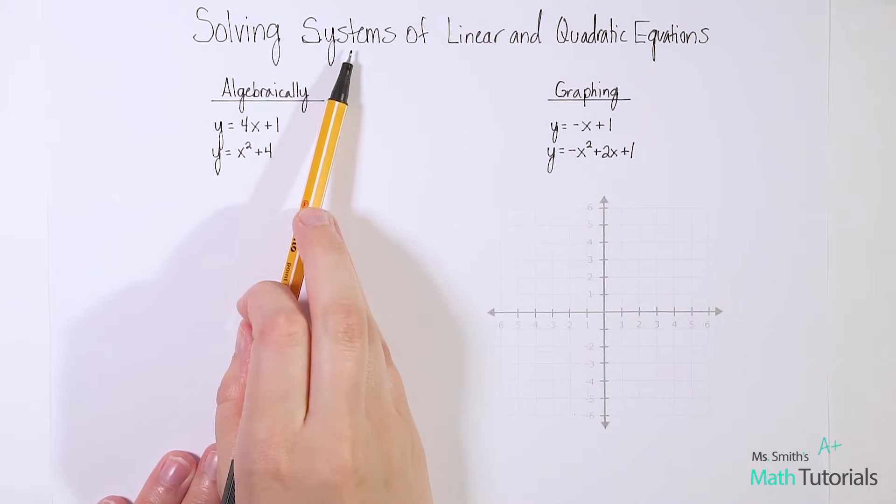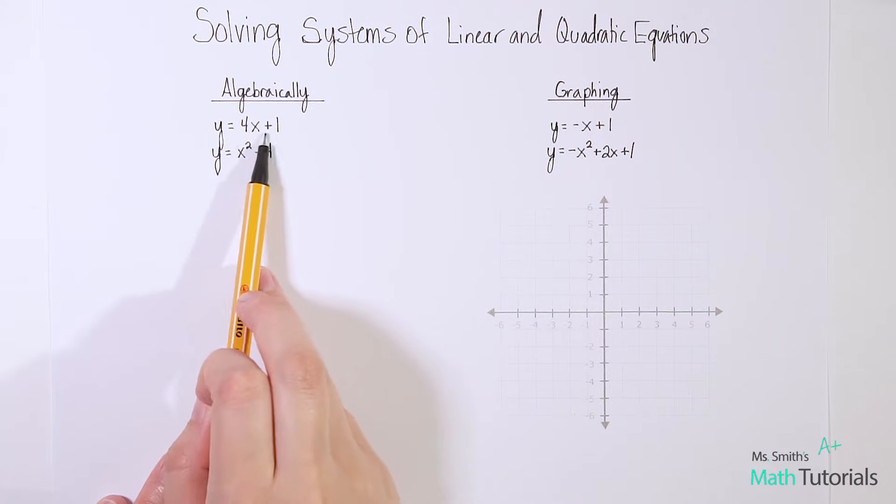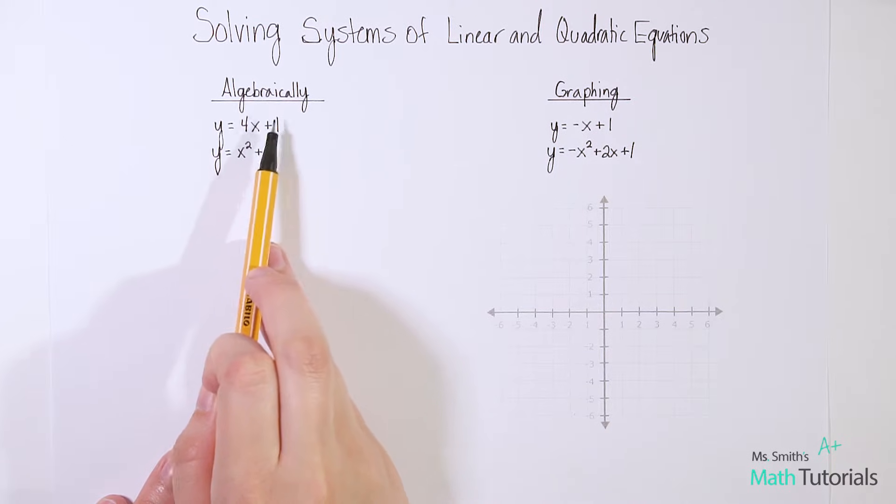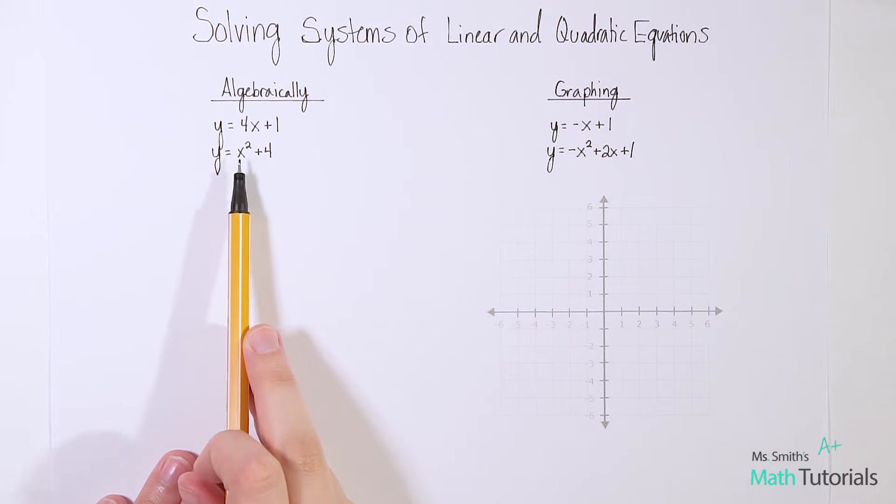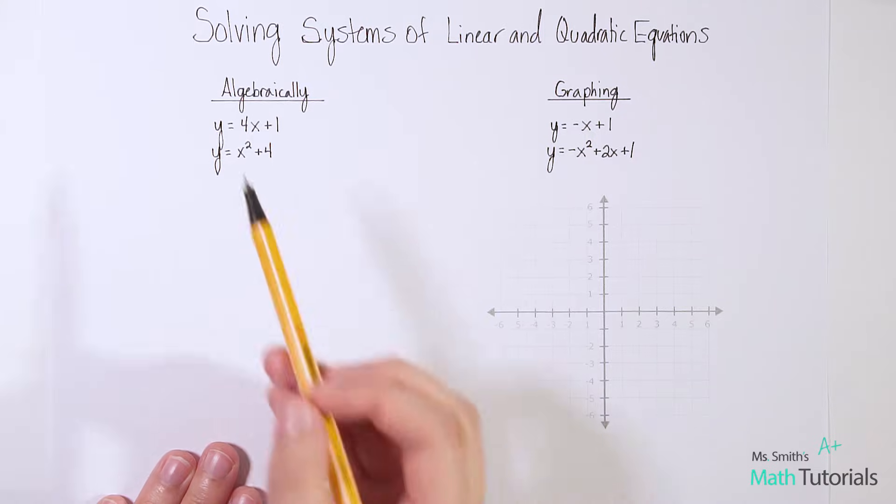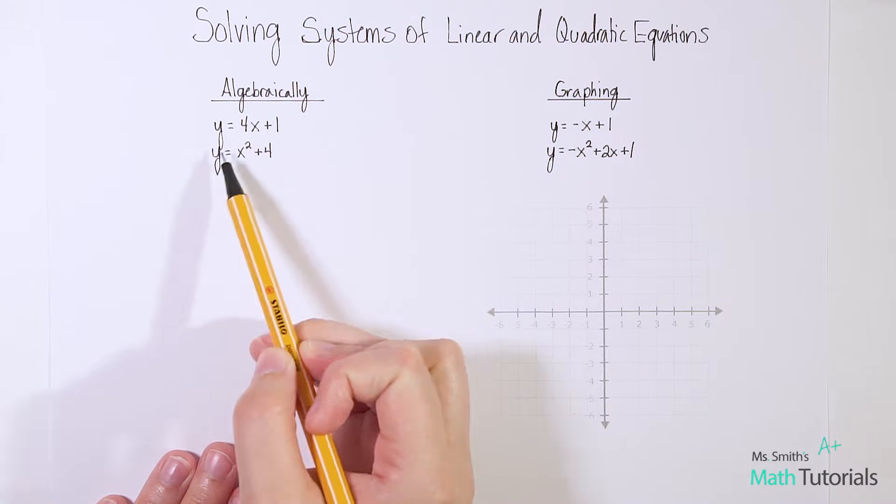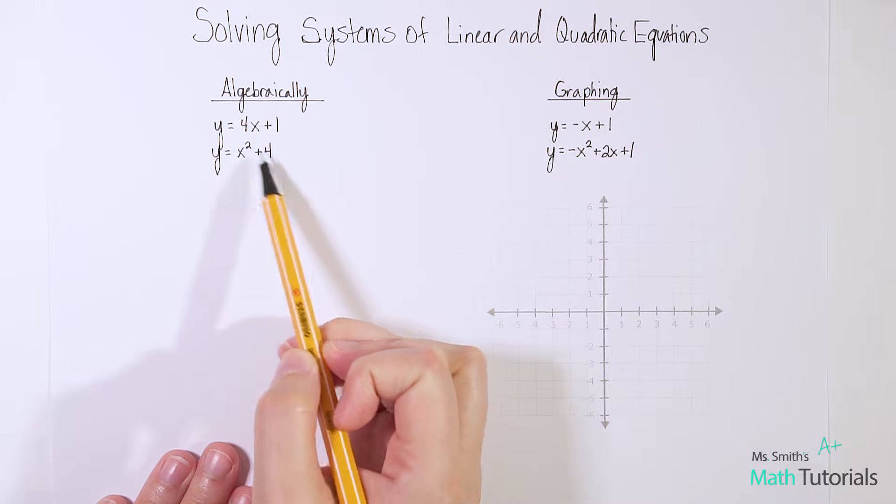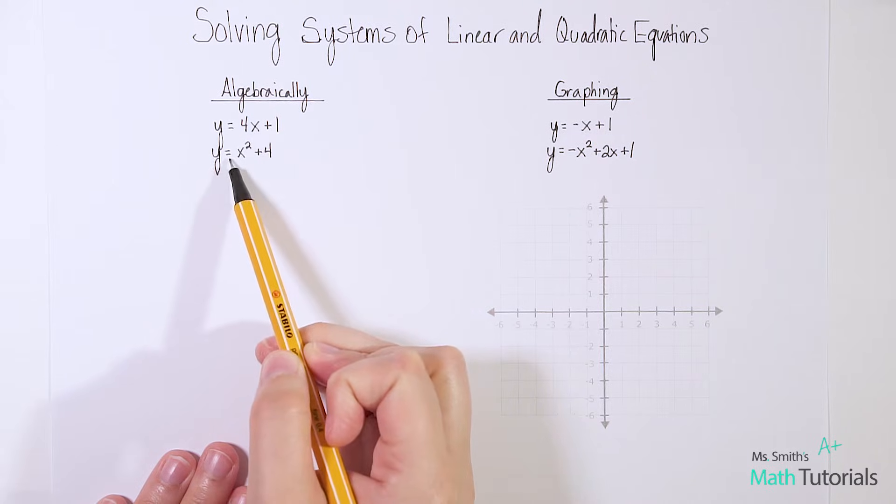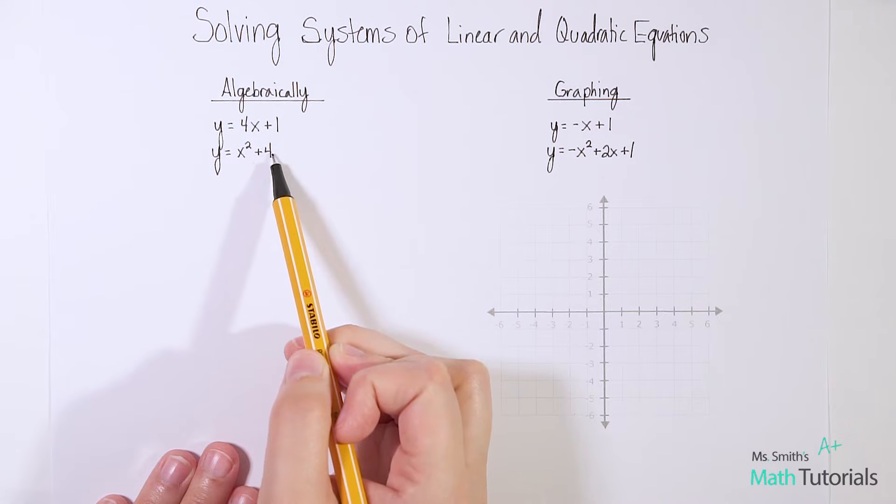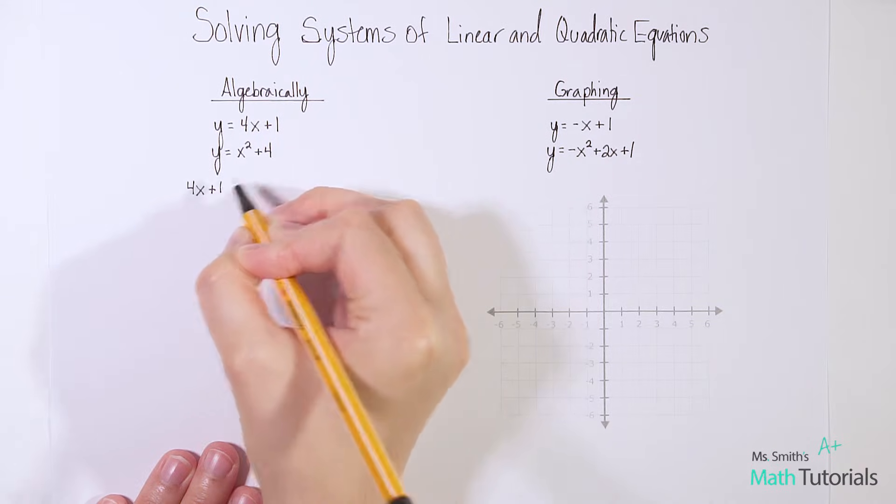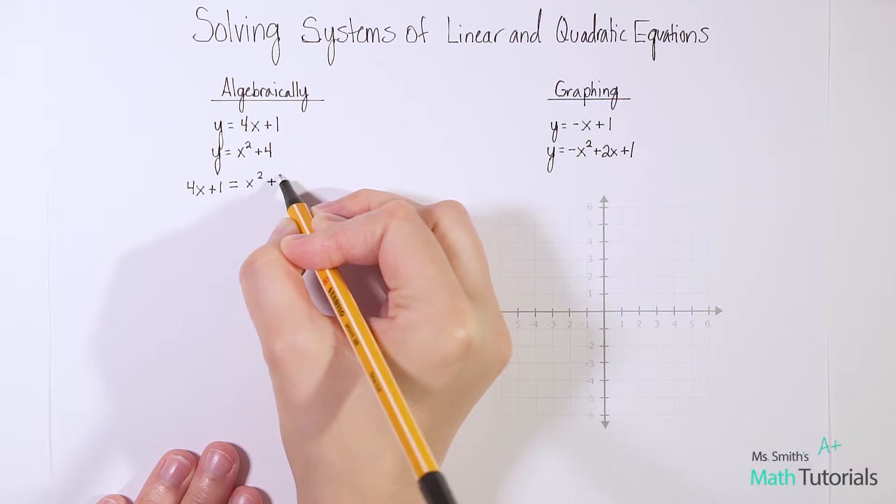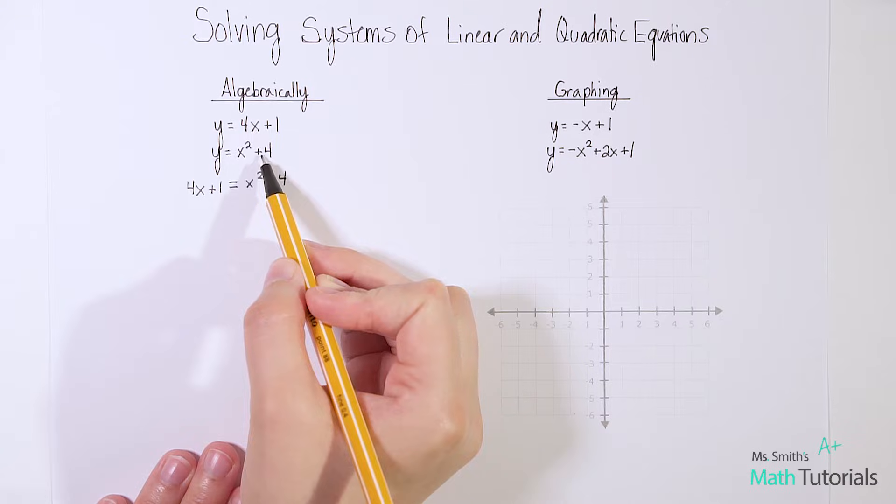So remember, a system is two equations. One will be linear. So in this example, this first one's our linear equation. Remember, linear equations are to the power of one, your highest exponent on a variable will be one. And then a quadratic equation, which in this case, would be our second equation. So its highest power on a variable is two. What I want you to recognize that this is y equals 4x plus 1, and this is y equals x squared plus 4. So if y equals this, and y also equals this, then these two things equal each other. So that's an equation that we can write.